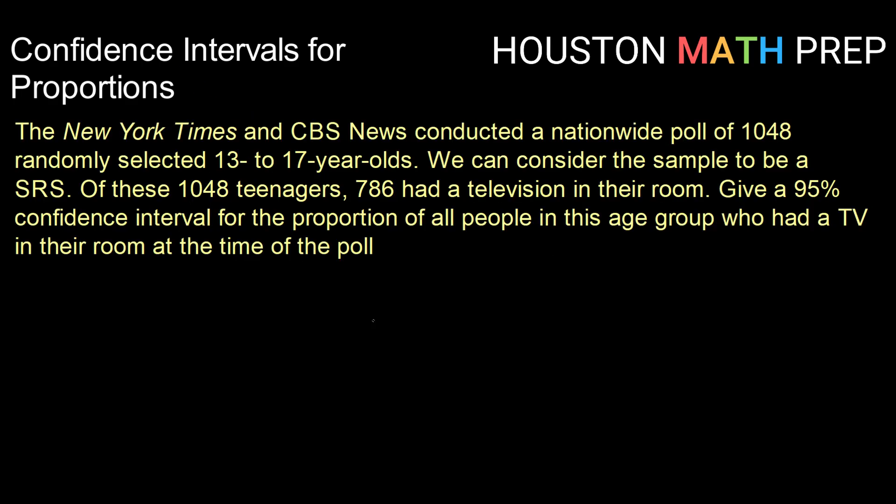Okay, so let's take a look at calculating. The New York Times and CBS News conducted a nationwide poll of 1,048 randomly selected 13 to 17 year olds — we can consider that a simple random sample. Of these 1,048 teenagers, 786 said they had a television in their room. We want to create a 95% confidence interval for the proportion of all people in that age group who had a TV in their room at the time of the poll.